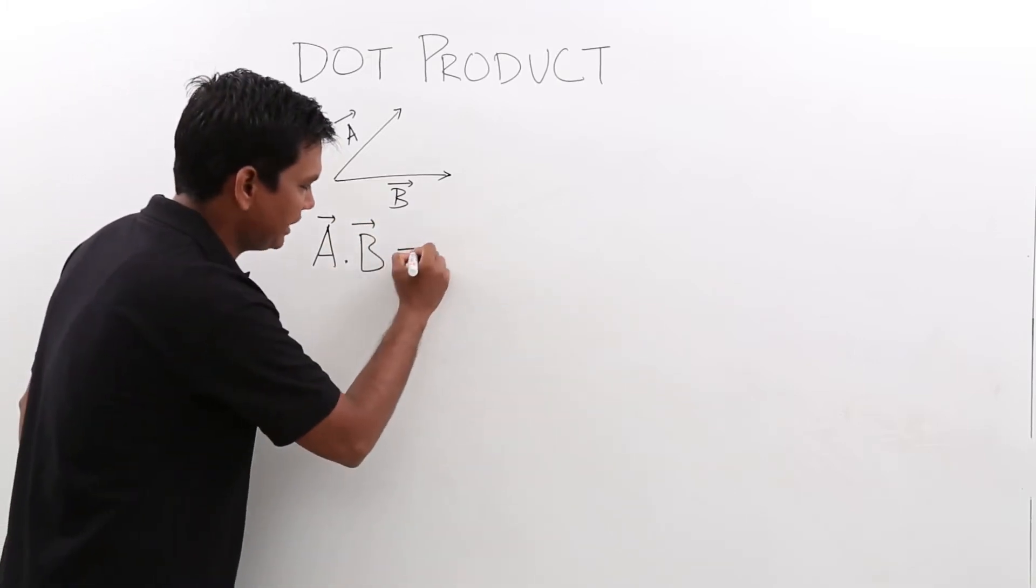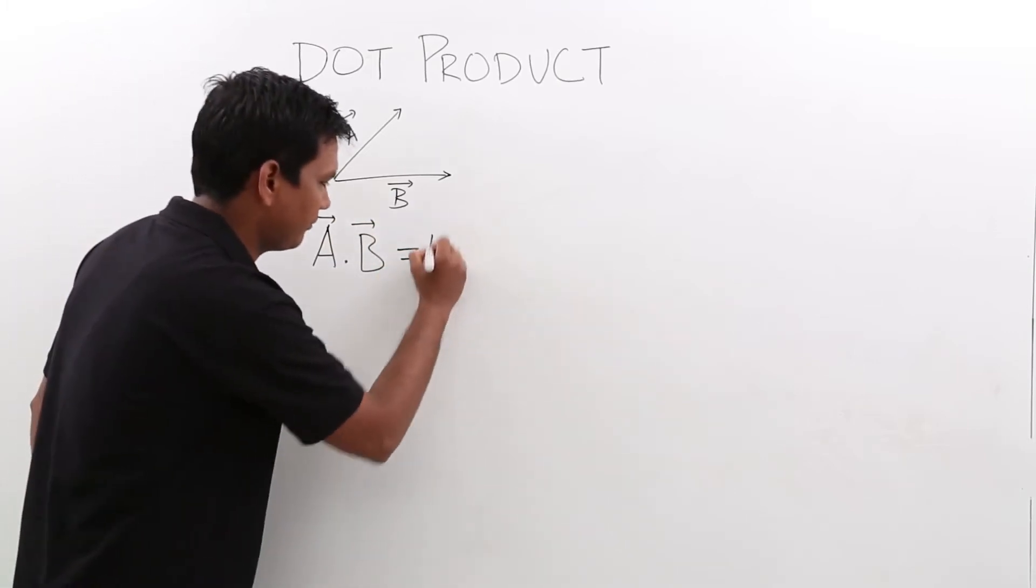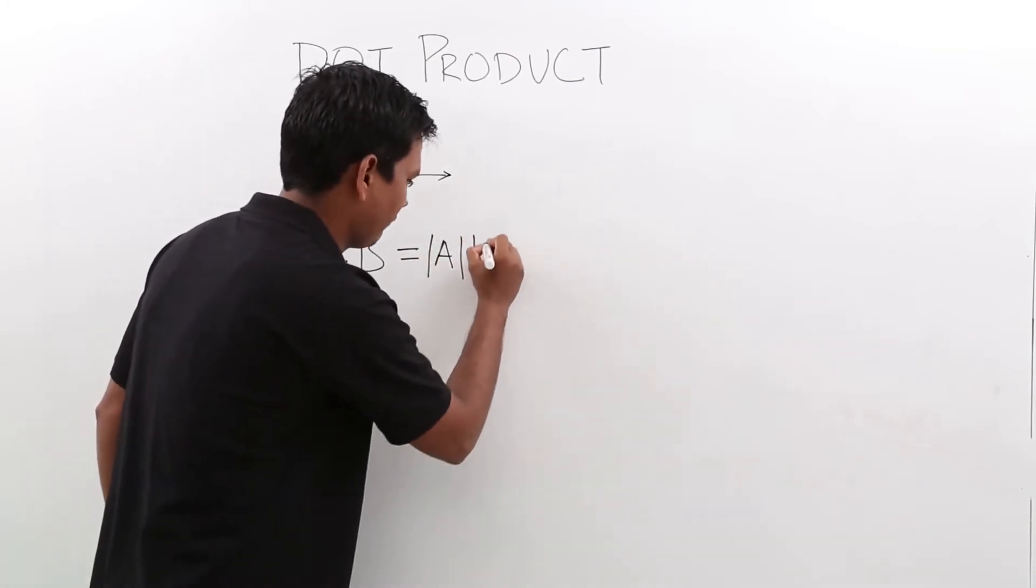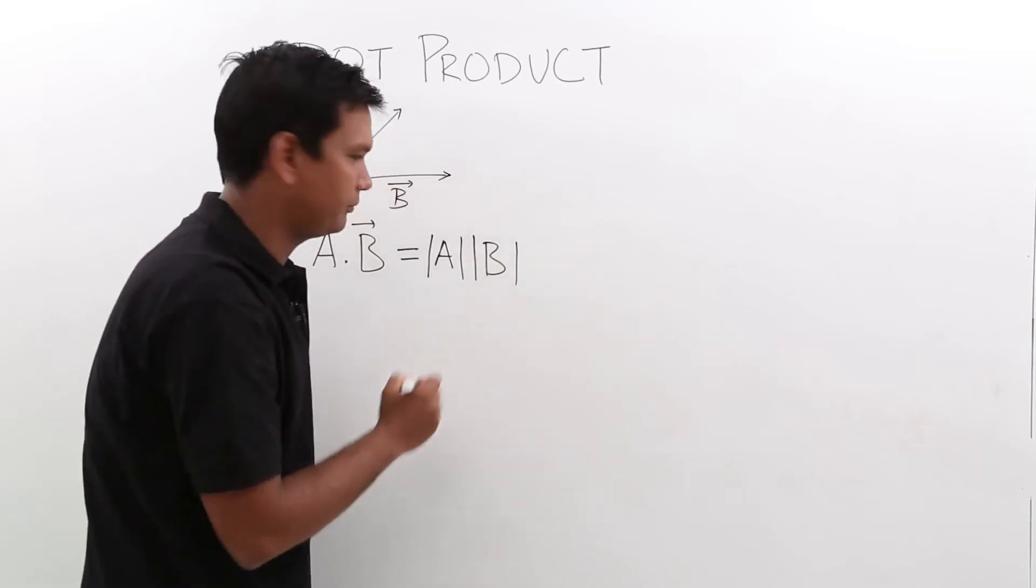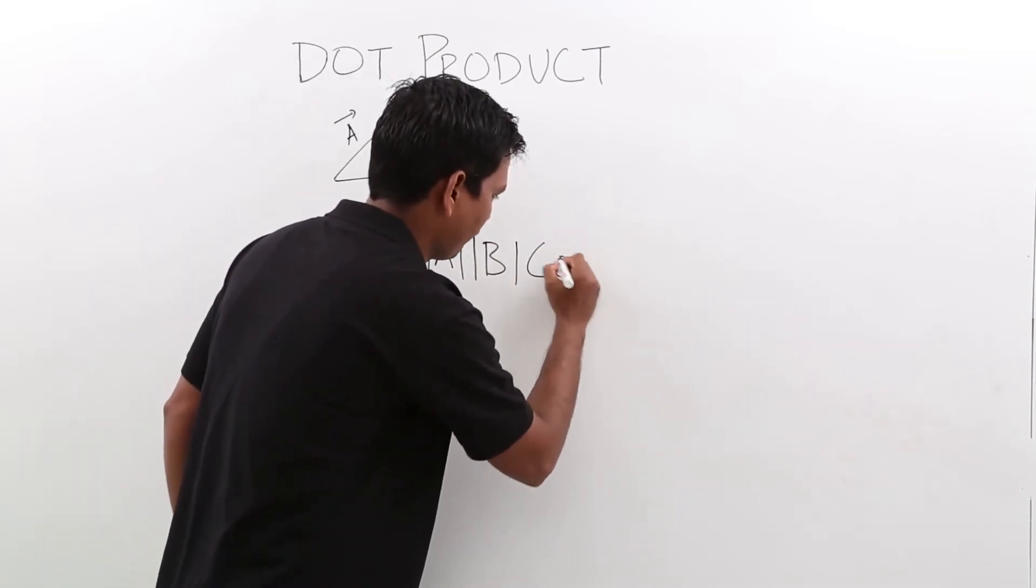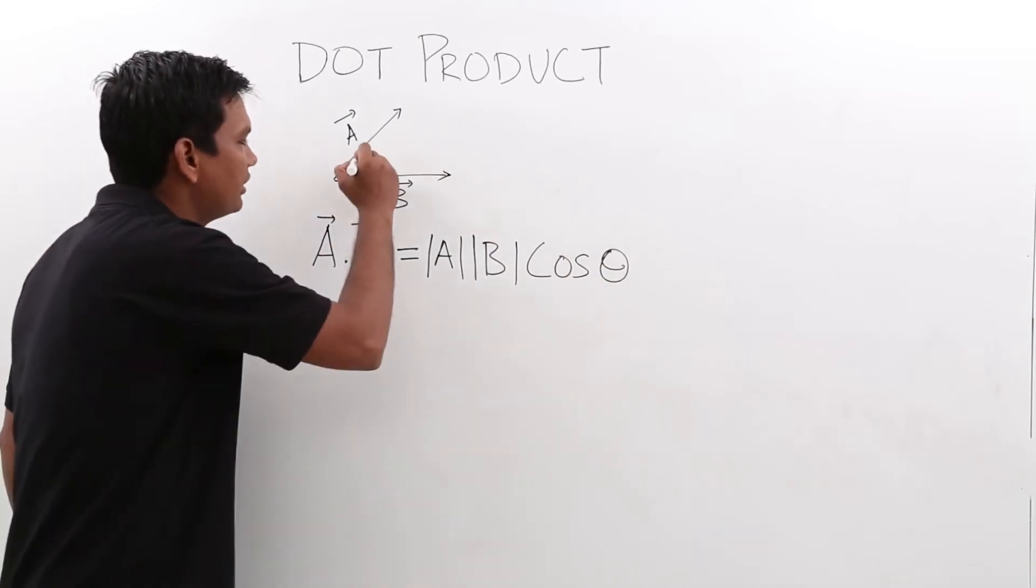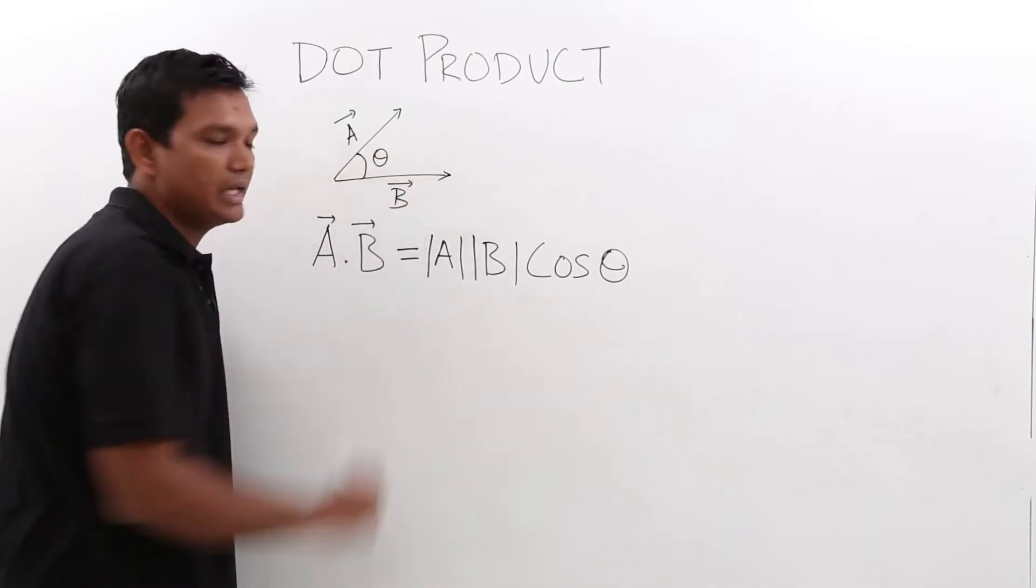A dot B, in general by definition, is nothing but mod A mod B cos theta. The theta is nothing but the angle between the A and B vector.